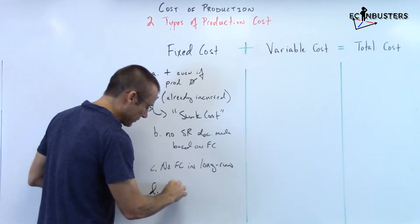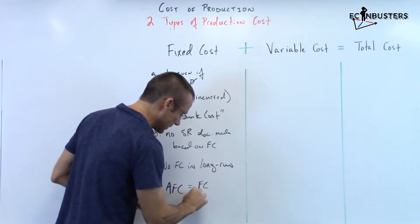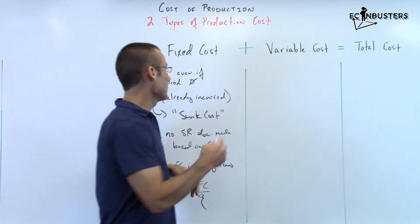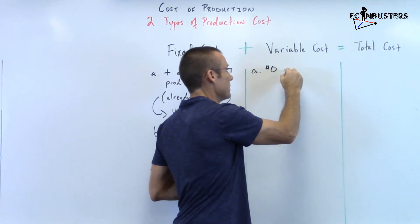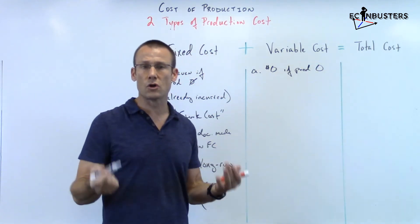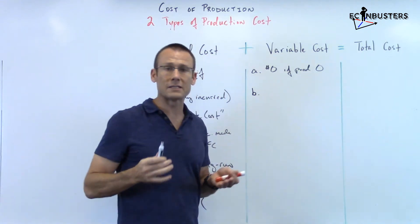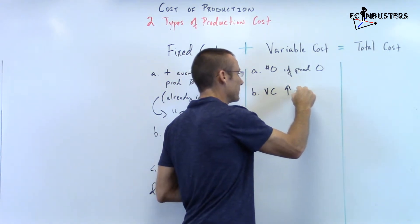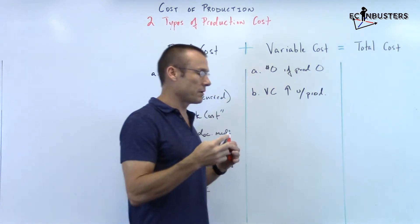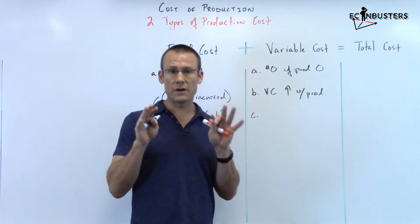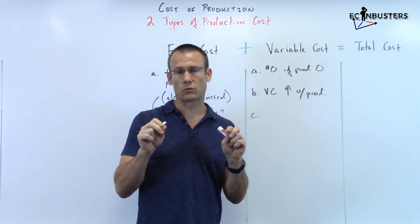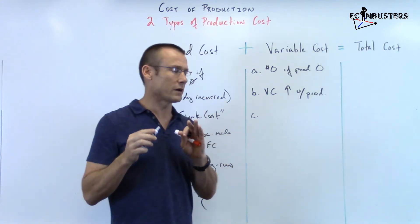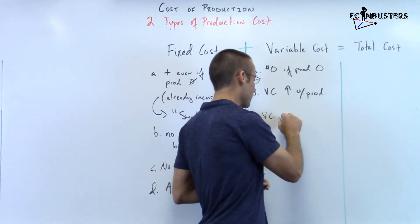Point D: average fixed cost — how do you find it? It's simply fixed cost divided by quantity. Now, variable cost: first, variable cost can be zero if production is zero. Variable costs don't always have to be positive. Second, variable costs increase with production — as production increases, variable cost increases. Third, variable cost is what we use when making short-run decisions.